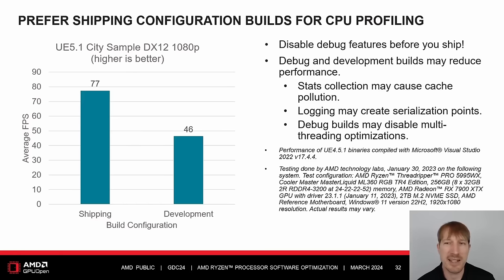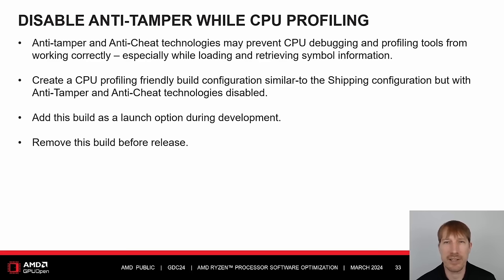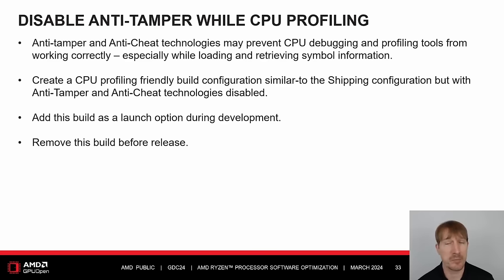During the investigation of open issues, developers may request changes that enable debug features on shipping and test configurations. However, it is critical to disable debug features before you ship your software. Anti-tamper and anti-cheat technologies may prevent CPU debugging and profiling tools from working correctly, especially while loading and retrieving symbol information. Consequently, we recommend creating a CPU profiling-friendly build configuration similar to the shipping configuration but with anti-tamper and anti-cheat technology disabled. Add this build as a launch option during development and remove it before release.